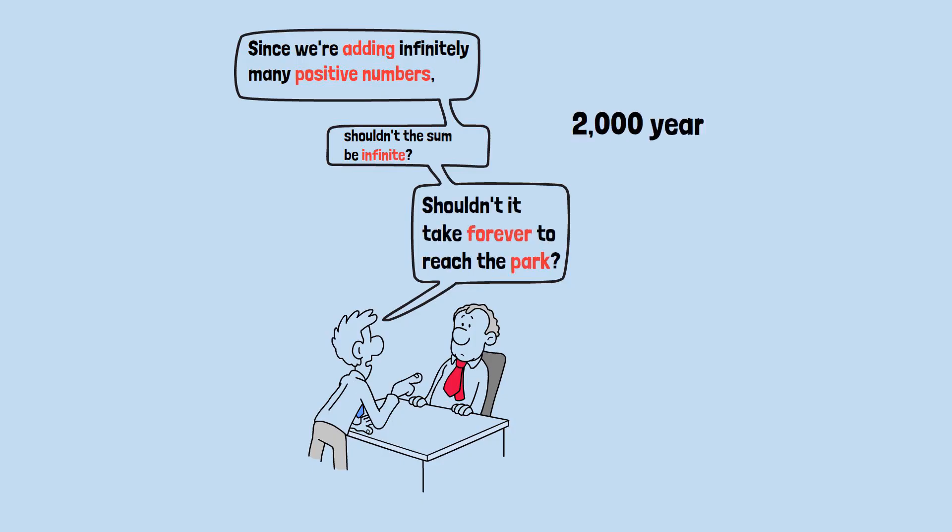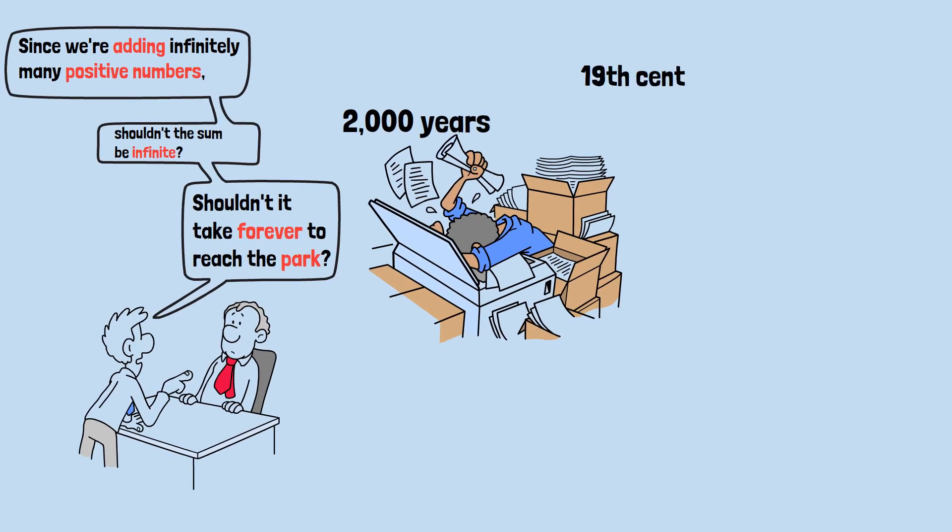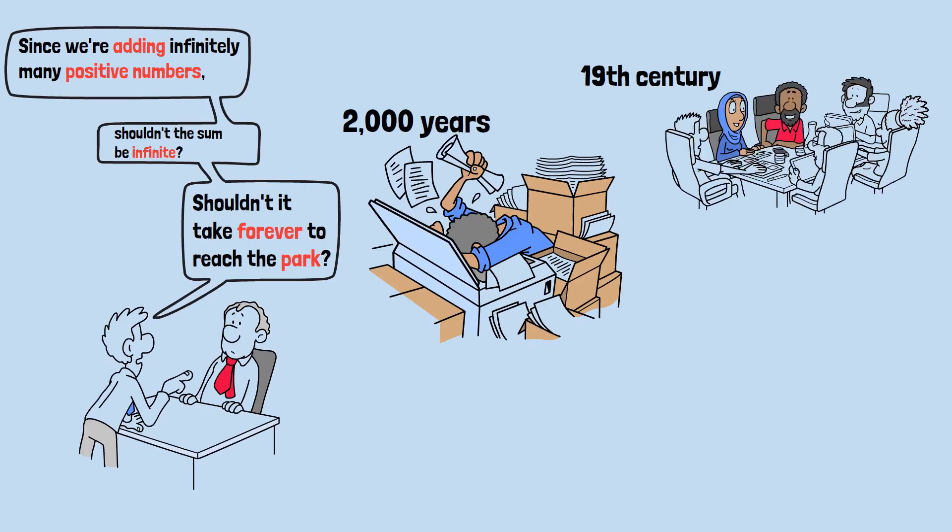For over 2,000 years mathematicians struggled with Zeno's challenge. The breakthrough came in the 19th century when they developed a rigorous understanding of infinite series and limits. You can add up infinitely many numbers and still get a finite answer.